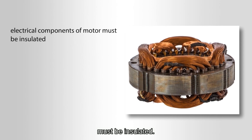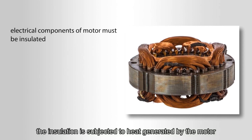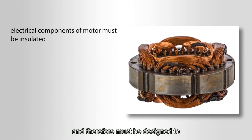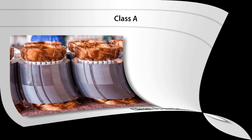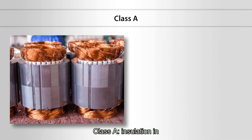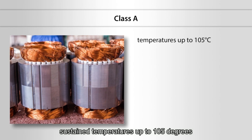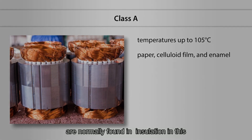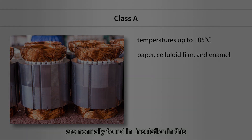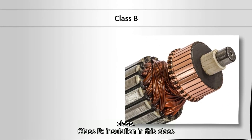The electrical components of a motor must be insulated. The insulation is subjected to heat generated by the motor and therefore must be designed to withstand the heat generated in a specific application. Class A insulation: in this class, insulation must be suitable for sustained temperatures up to 105 degrees Celsius. Paper, celluloid film, and enamel are normally found in insulation in this class.